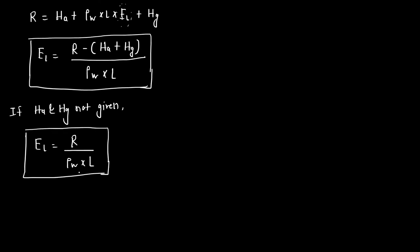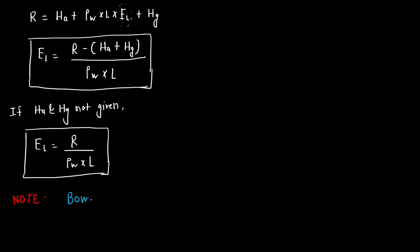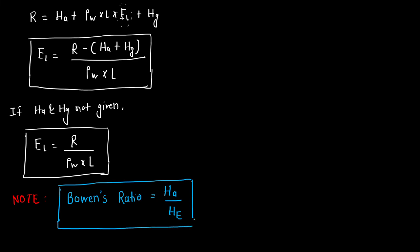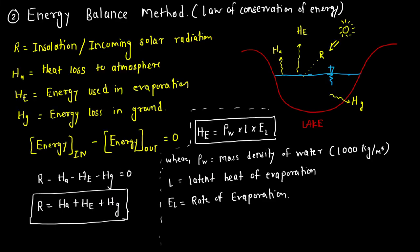This is the analytical formula using the energy balance method to find the rate of evaporation. An important note for exams: Bowen's Ratio is defined as Ha divided by He — the ratio of heat lost to the atmosphere to the energy used in evaporation.